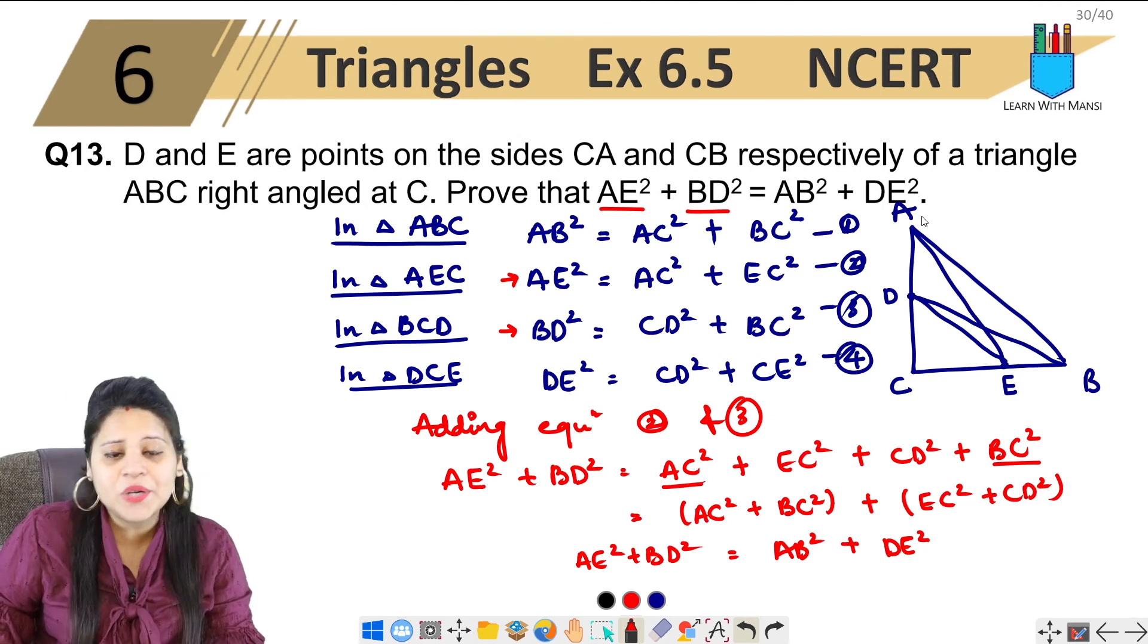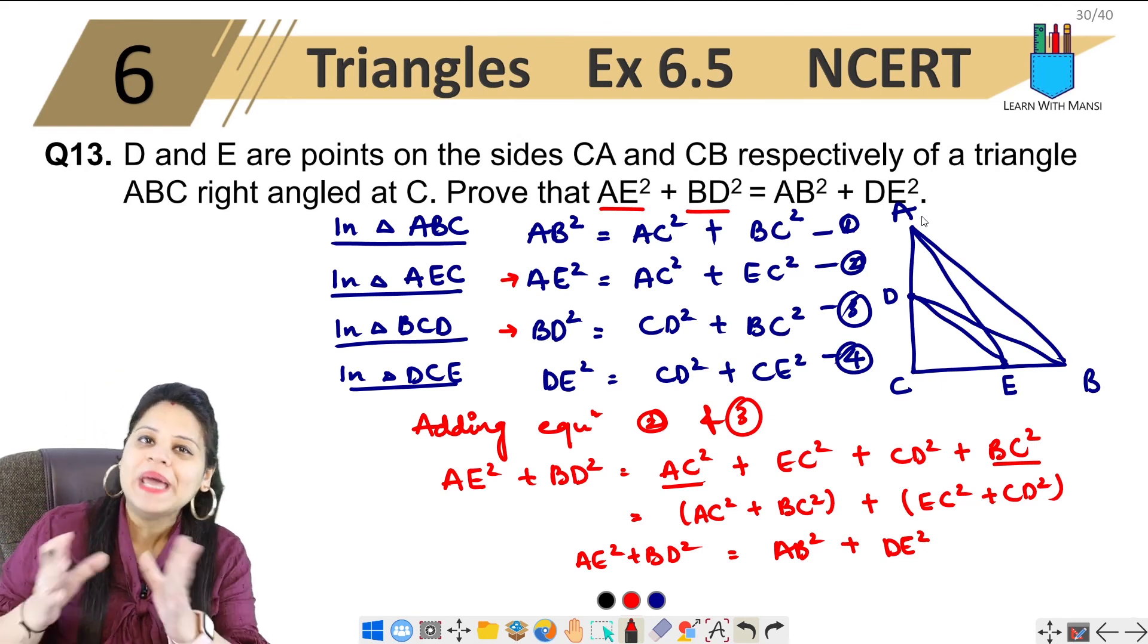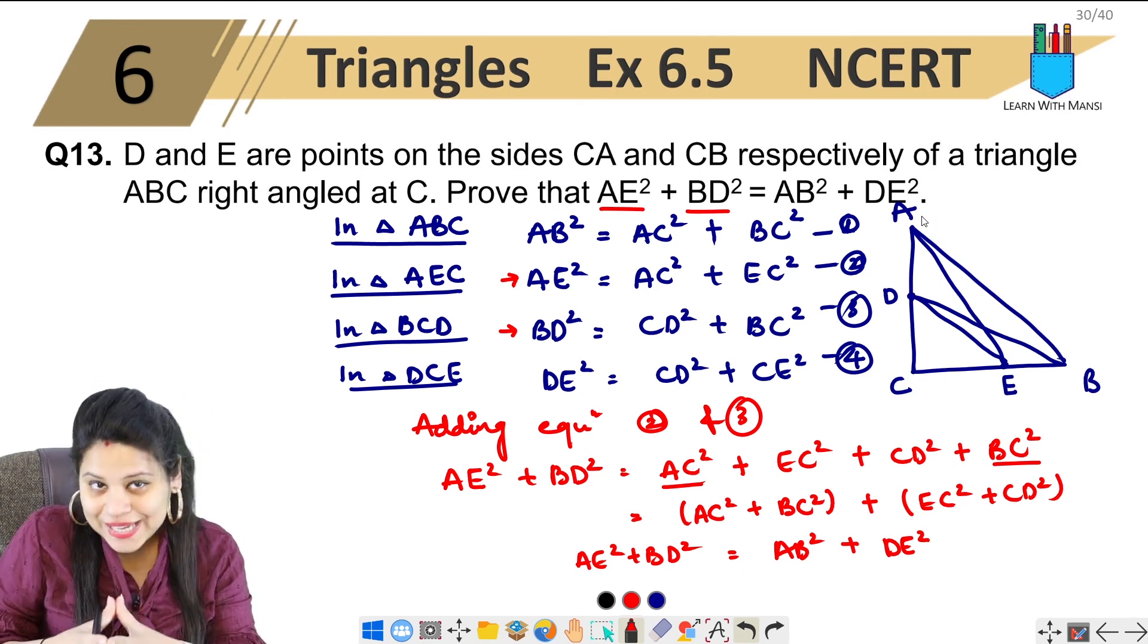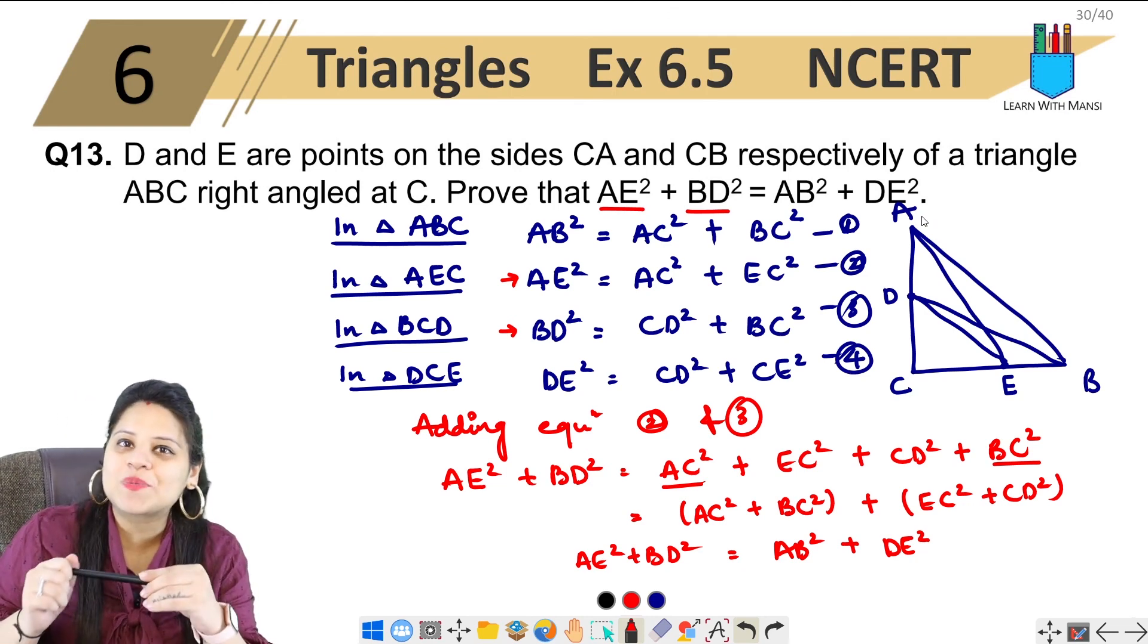Okay? Simple question. If we have four right angles, then it's Pythagoras theorem. Okay? So this is our 13th question of exercise 6.5.